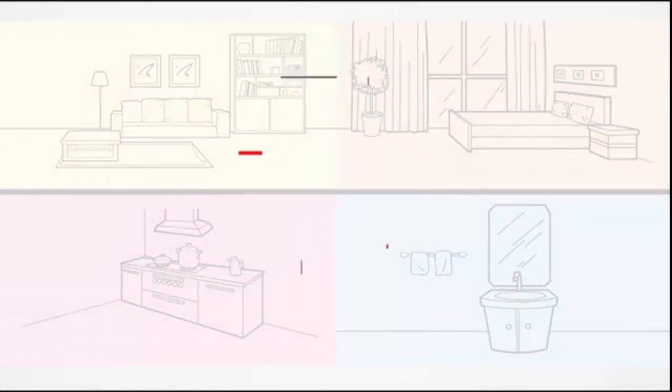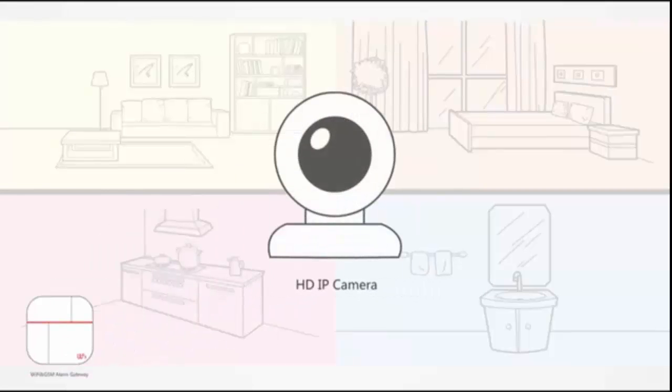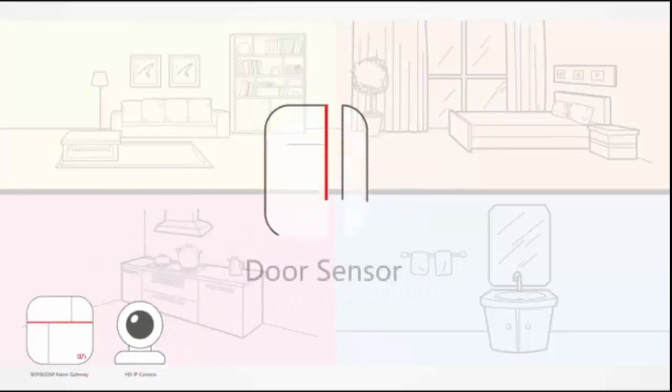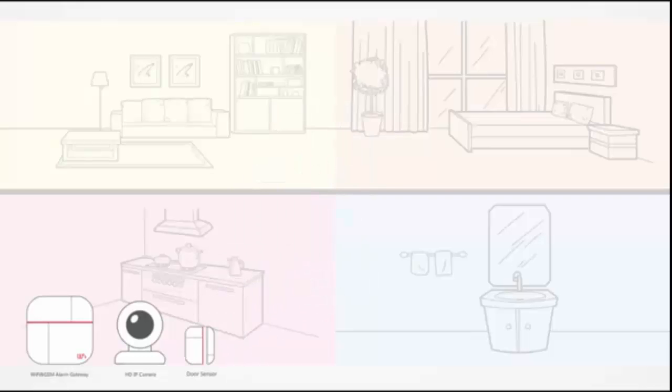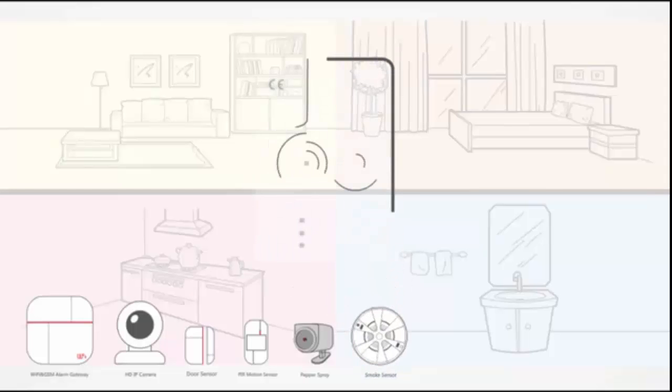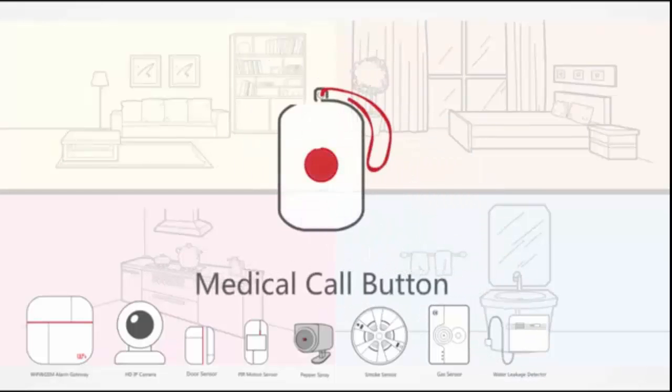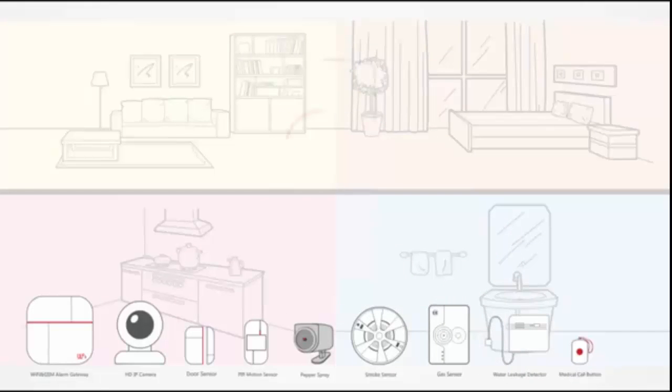The ultra-modern certified package includes a dual network alarm gateway, a two-way communication HD IP camera, a multi-use door and window sensor, a passive infrared motion detector, a battery-powered smoke detector, a mains-powered gas detection appliance, a water leakage detector, a transportable medical call button and an emergency SOS device.